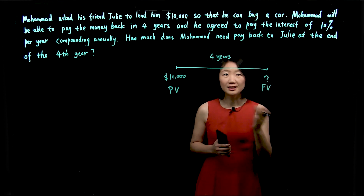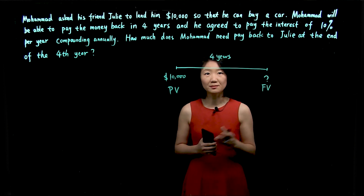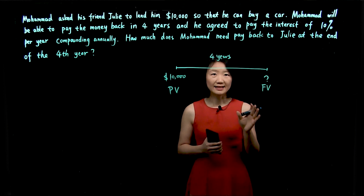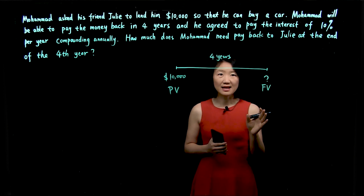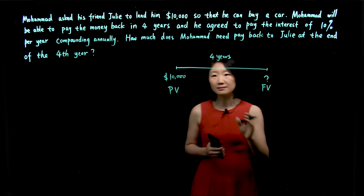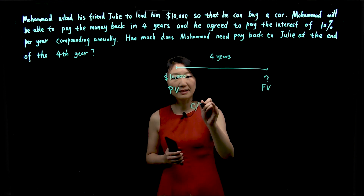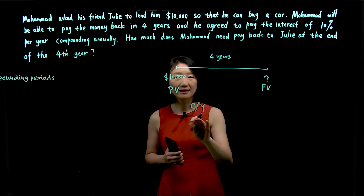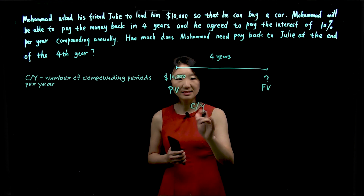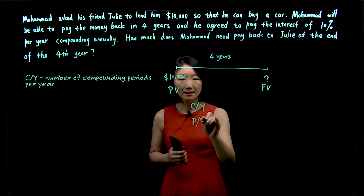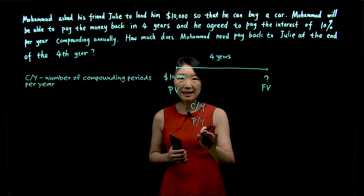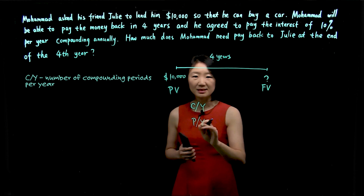In order to solve a compound interest problem, we need to identify seven variables. First, CY — compounding per year — and PY — payments per year.